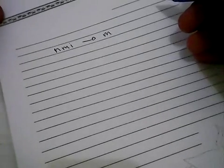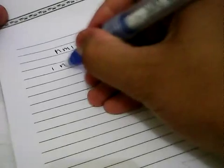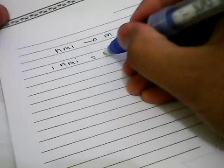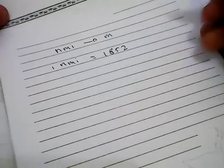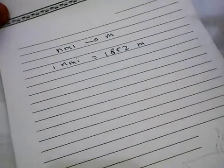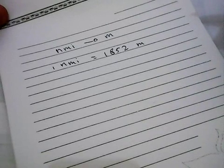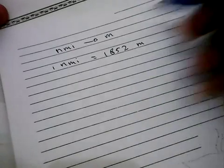Before we start our example problem, before we solve our problem, we need to know that one nautical mile is equal to 1,852 meters. Well, that's an important conversion.